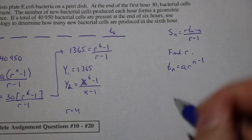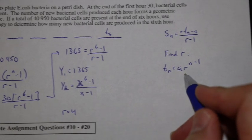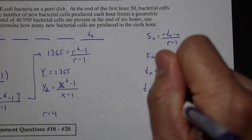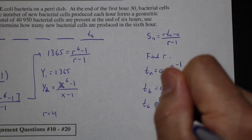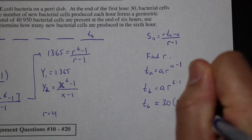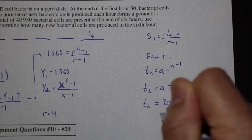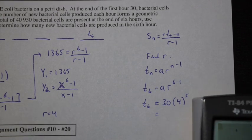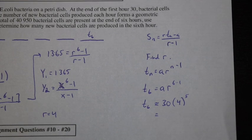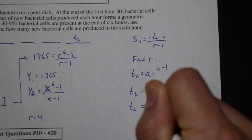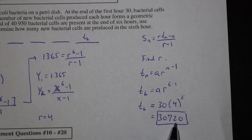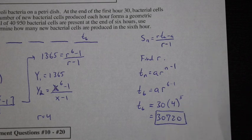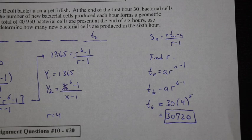Now using R equals 4, we find T6 equals A times R to the n minus 1 equals 30 times 4^5. Using the calculator, 30 times 4^5 equals 30,720. So in the sixth hour, 30,720 new bacterial cells are produced. Okay, you're ready for your assignment, and I will see you in class.